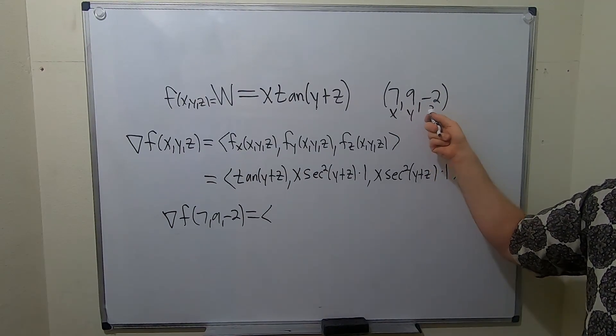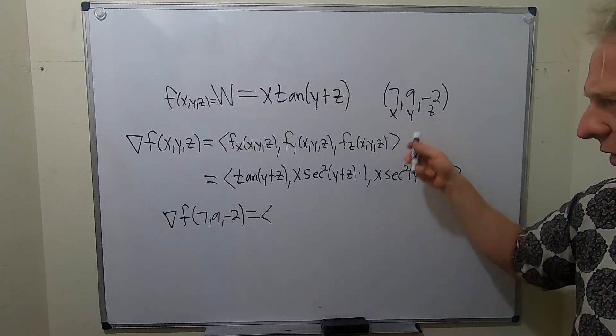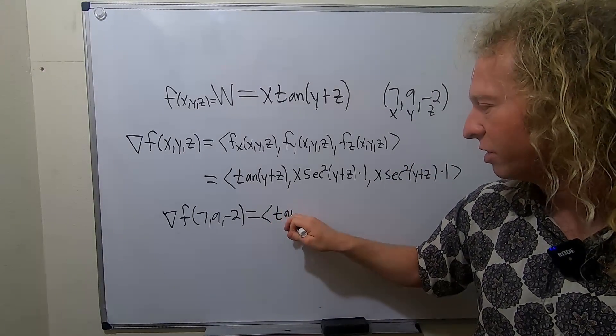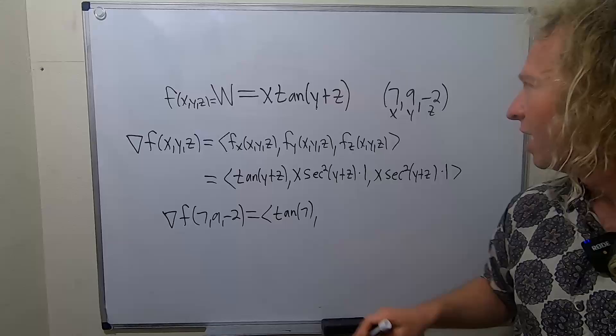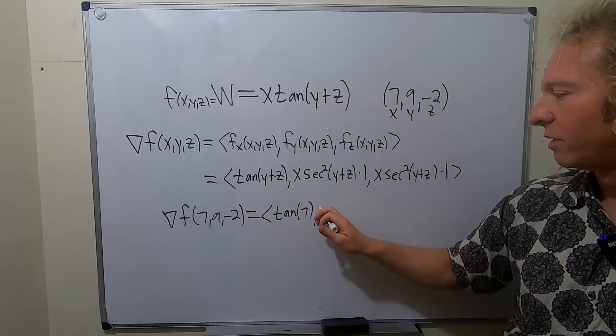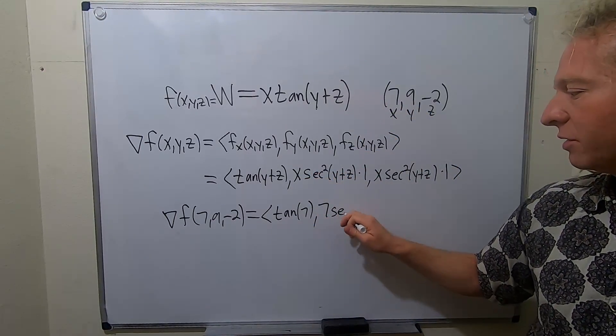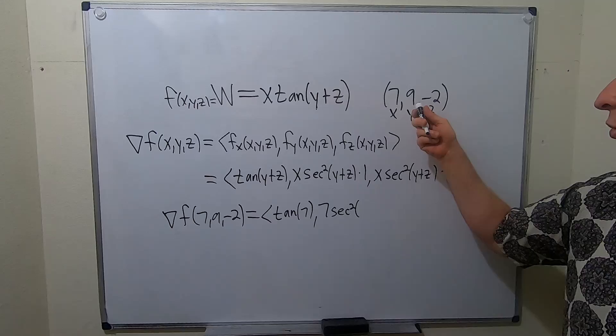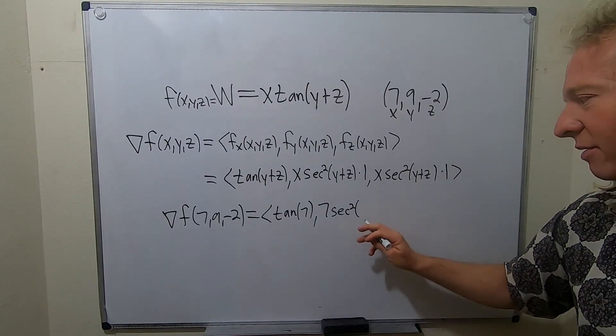So y plus z is just going to be 7, right? Tangent of 7. x is 7. Then we have secant squared of y plus z. That's also 7. Lots of 7s.